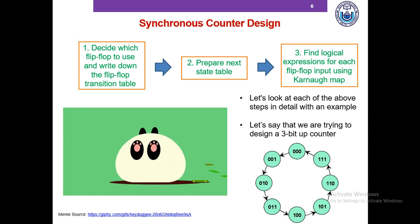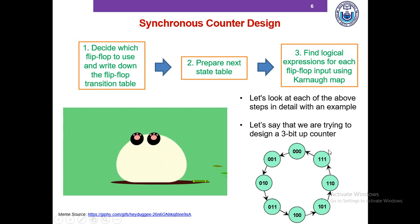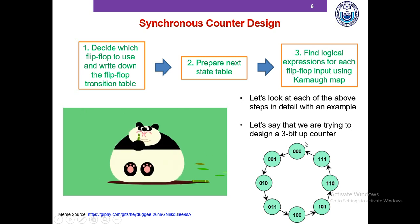Let's say that we're trying to design a 3-bit up counter. The counter is 3-bit, which means it counts from 000 to 111, corresponding to decimal 0 to 7. It's an up counter, which means it counts from 0, then 1, then 2, then 3, then 4, then 5, then 6, then 7, and then comes back to 0 and the count starts all over again.